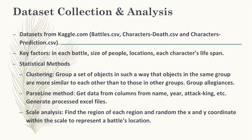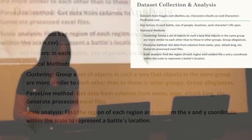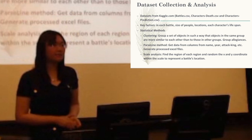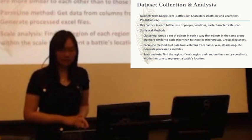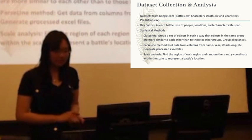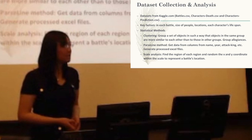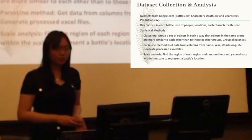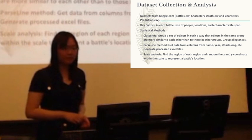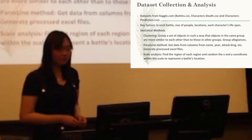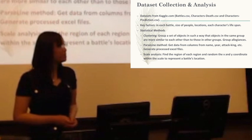So the data set is from kaggle.com. I'm interested in three parts. The first is the battle. All of them are from the CSV files. And the key factors I'm interested in are the battle, the size of people, locations of each battle, and each character's lifespan.